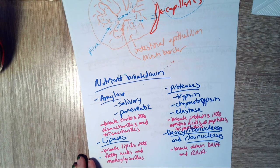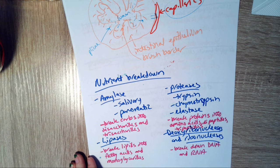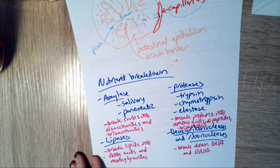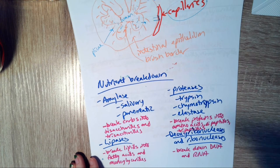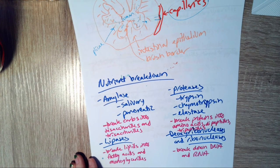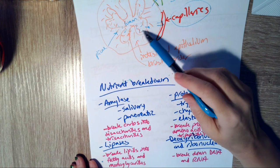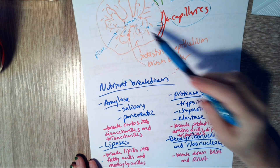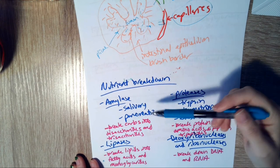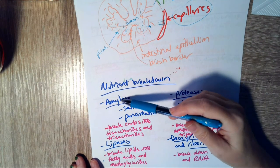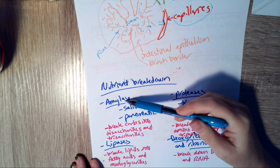The stomach continues with some mechanical digestion by the mixing and the action of the smooth muscle. But again, we're not really breaking things down with the mechanical digestion, not in a chemical sort of sense. We really need to do chemical digestion to break down those nutrients into their small component pieces so they can be absorbed. So to do chemical breakdown, we have amylase, which breaks down carbohydrates.